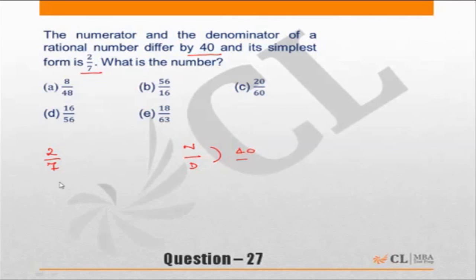First, the denominator should be a multiple of 7. Any choice in which the denominator is not a multiple of 7 cannot be the correct answer. So choice A, denominator is 48 not a multiple of 7, B is incorrect again, C is incorrect because none of them are multiples of 7.